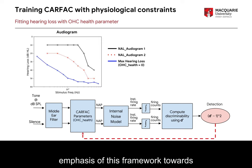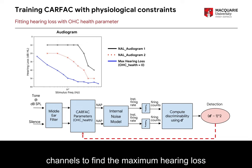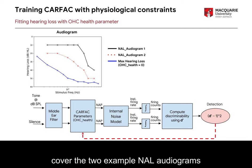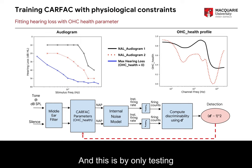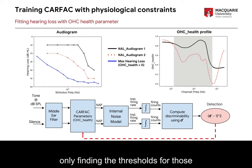We can now shift the framework towards fitting the CARFAC to individual hearing losses, in particular by performing gradient descent relative to the outer hair cell health parameter. First, we set outer hair cell health to zero in all channels to find the maximum hearing loss possible, shown in blue in the audiogram, ranging from 23 dB HL at the lowest frequencies to about 55 dB HL at the highest frequencies. If we perform gradient descent over about 300 epochs, lasting about four to five minutes, we receive two outer hair cell health profiles for the example NAL audiograms. By testing for the D-prime thresholds within a specific grey rectangle at eight frequencies, and despite only testing at these specific frequencies, we are able to get smooth outer hair cell health profiles due to an L1 regularizer.